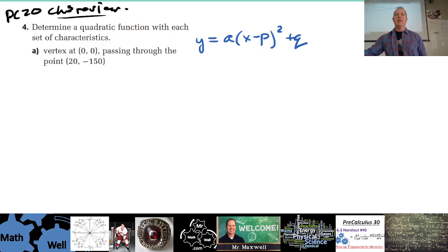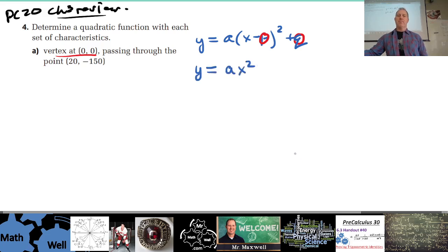Why? Because we know that this value is 0 and this value is 0, because the vertex is (0, 0). So that turns into this equation so far, right?